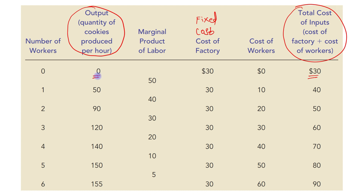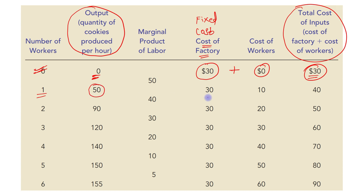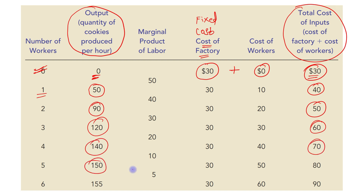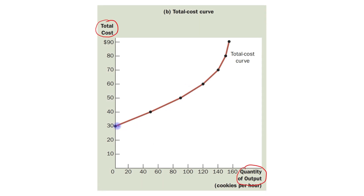Even if no unit is produced, we still have a fixed cost of $30. So $30 plus $0 equals $30 because no worker is hired but there is still the cost of the factory. When the number of workers is 1, the total cost is $40. We then plot all these combinations — $30, $40, $50, $60, $70 — and after joining them we get the total cost curve.